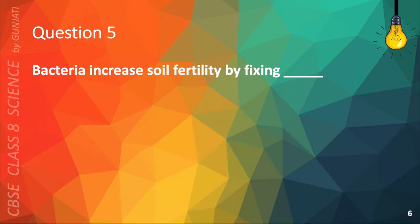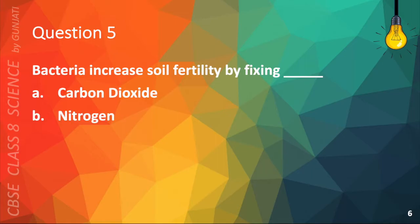Question 5. Bacteria increases soil fertility by fixing A. Carbon dioxide, B. Nitrogen, C. Water, or D. Cows. The correct answer is B. Nitrogen.